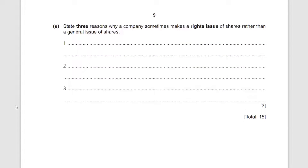Give three reasons why a company sometimes makes a rights issue of shares rather than a general issue in the stock market. You need to know what a rights issue is: you offer existing shareholders new shares at a lower, discounted price. The existing shareholders are likely happy to take them since they already own shares and can buy more at a discount. Reason one: they will be quickly subscribed — you don't have to convince new people to join, so it's faster and easier.